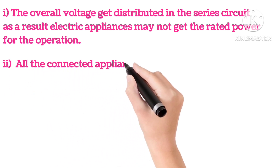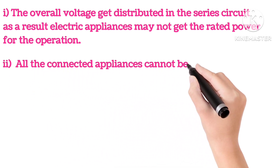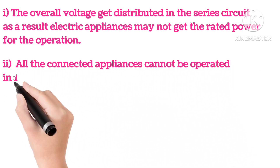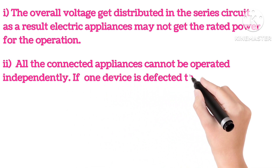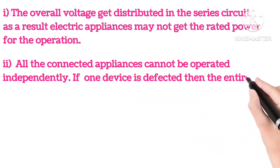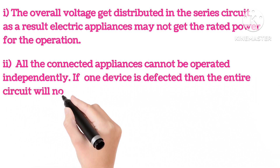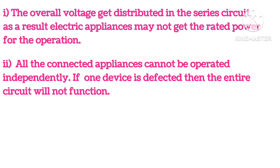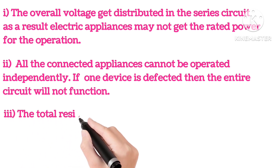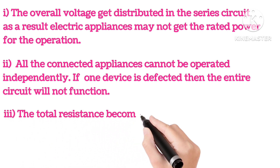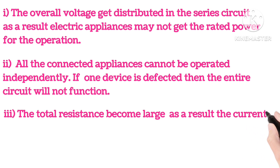Second, all the connected appliances cannot be operated independently. If one device is defective, then the entire circuit will not function. Third, the total resistance becomes large. As a result, the current is reduced.